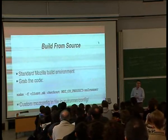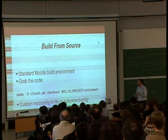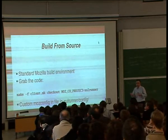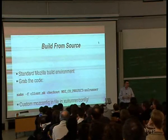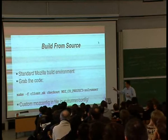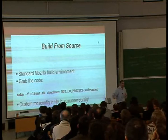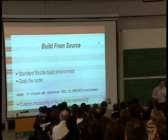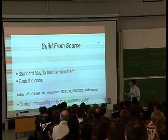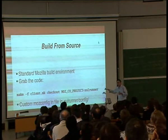If you want to be more adventurous — tinker around, contribute, submit bugs, submit patches — you can build your own version of XULRunner. It's a standard Mozilla build environment; the instructions are on developer.mozilla.org. When checking it out from CVS, use the MozCO project flag and specify the XULRunner project. If you were checking out Firefox you'd use 'browser'; for Thunderbird, 'mail'. You can check out multiple projects by comma-separating them.